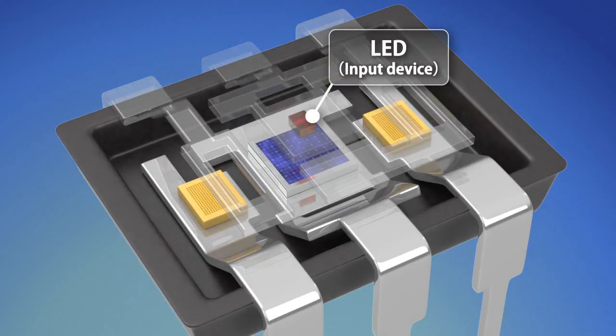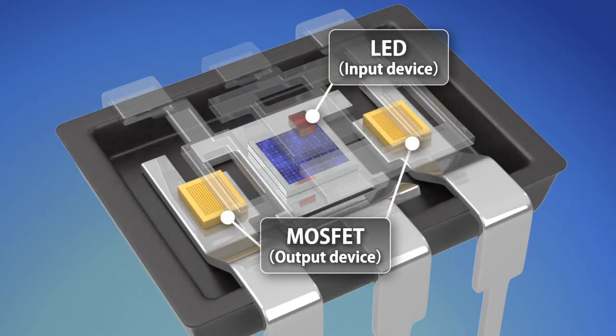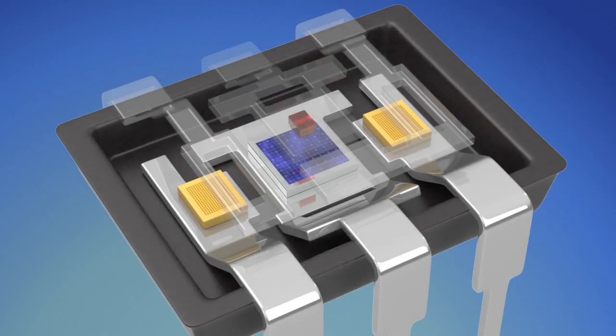A PhotoMOS is a semiconductor device that uses an LED for the input device and a MOSFET for the output device. Unlike mechanical relays, semiconductor devices have no mechanical contacts.